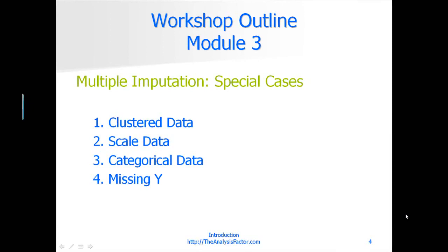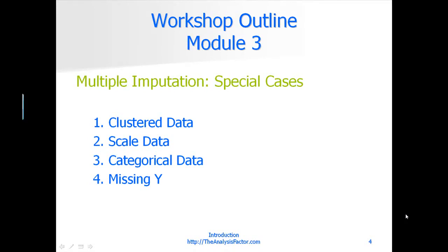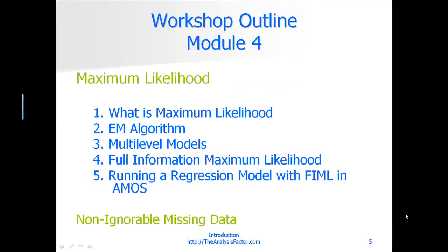These four situations include clustered data; scale items, when either one or a few items on a scale are missing or if a whole scale is missing; categorical data; and the case when Y, the dependent variable, is missing. In module four we'll spend most of the time talking about and demonstrating maximum likelihood approaches. Maximum likelihood doesn't get as much attention as multiple imputation because multiple imputation works in so many situations. Maximum likelihood only works for a few analyses, but when it works it's lovely.